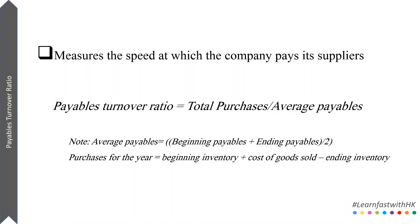Average payables is the beginning payables plus ending payables divided by two. So if we're talking about the year 2019, it's going to be the December 2019 payables figure plus the January 2019 payables figure, added together and divided by two — and that gives us our average payables.